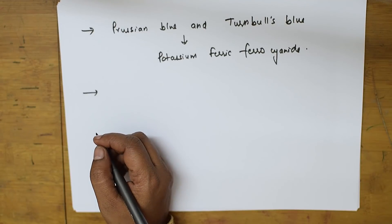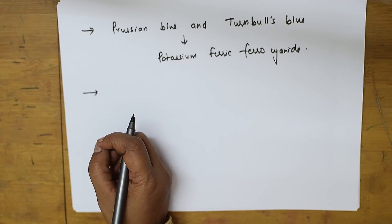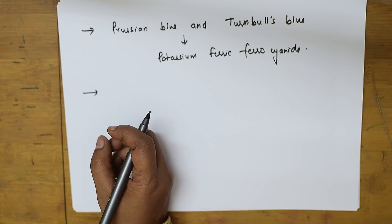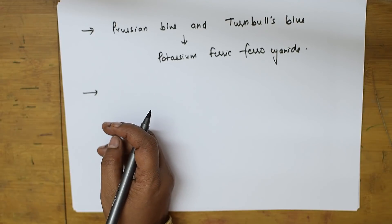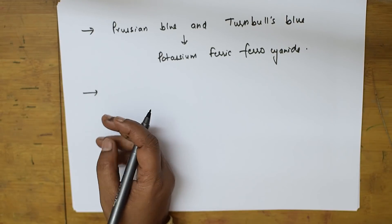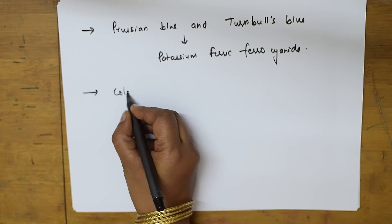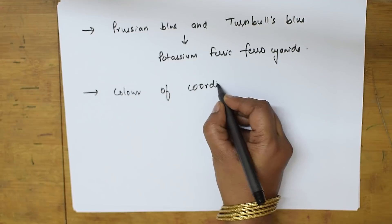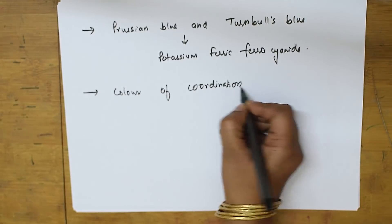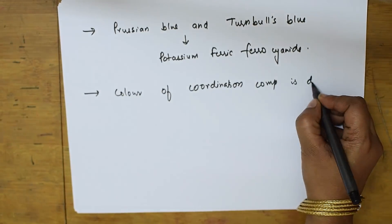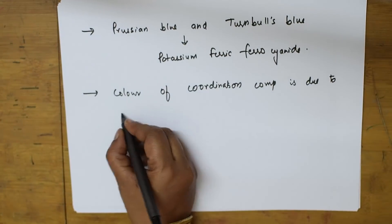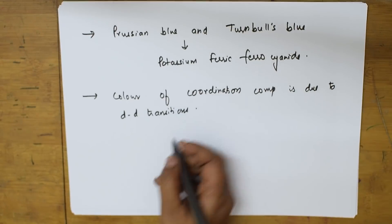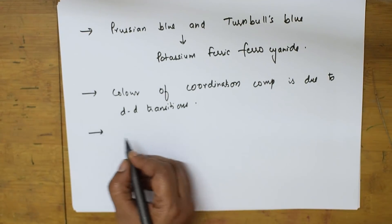The color of complexes in coordination chemistry is explained in terms of electronic transitions between t-orbitals. The color of coordination compounds is due to d-d transitions. Remember that.